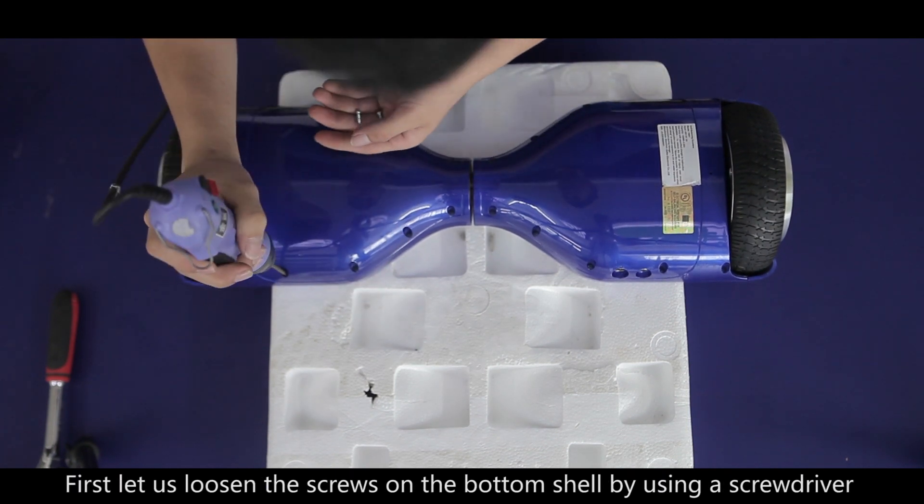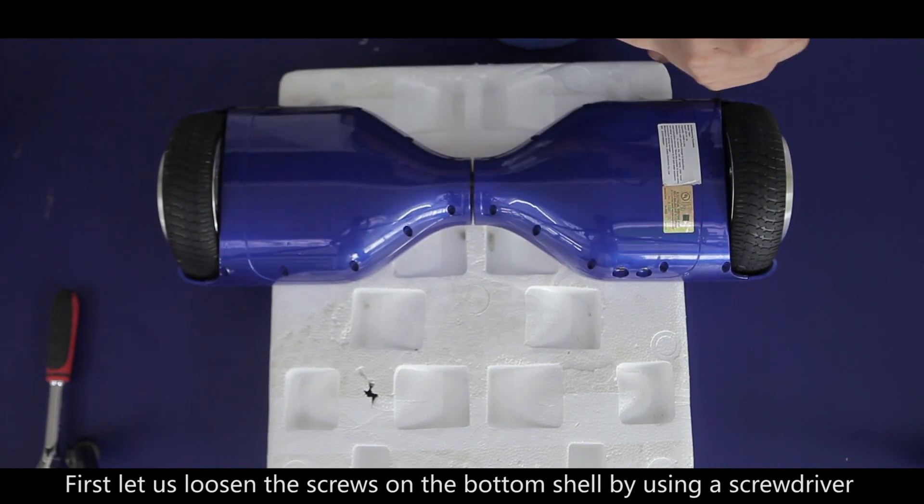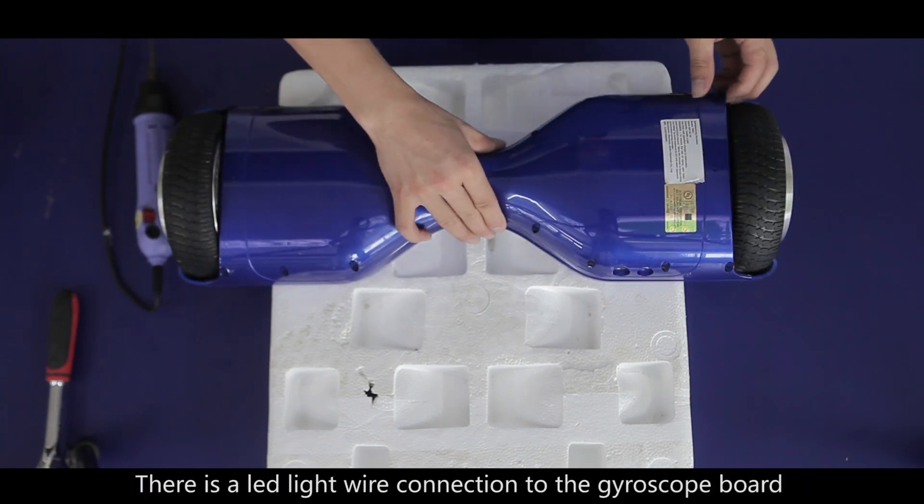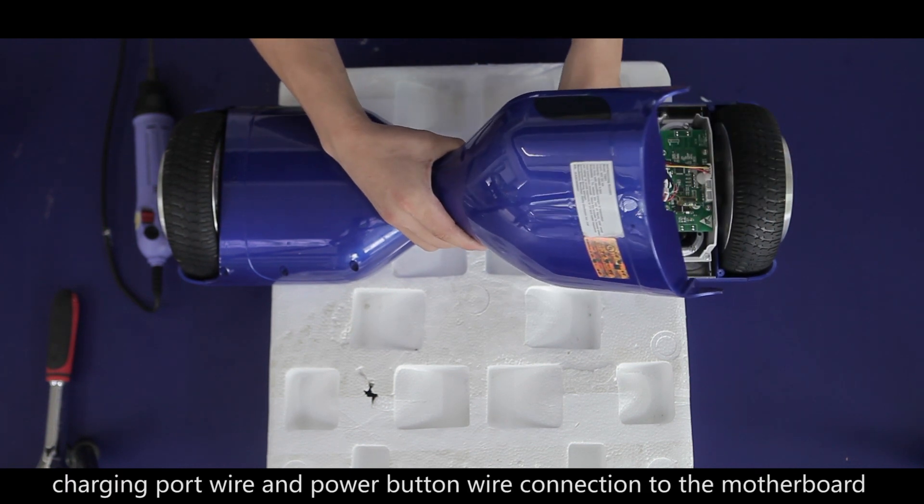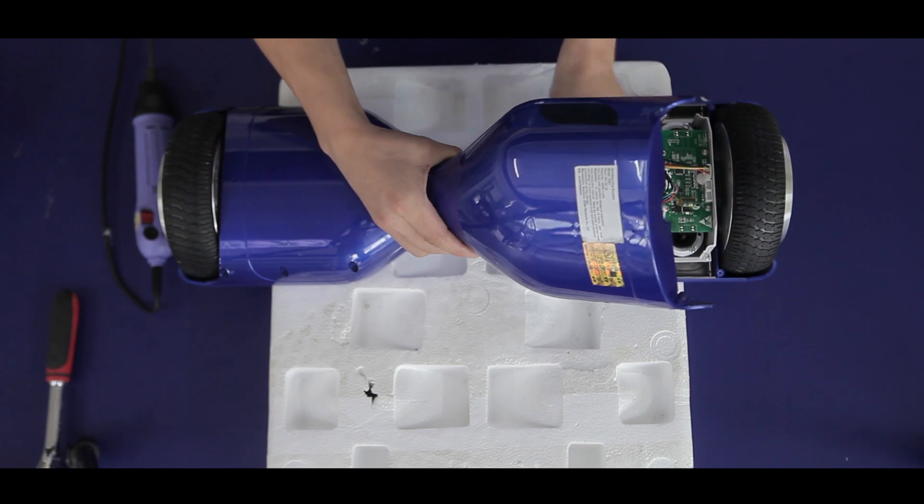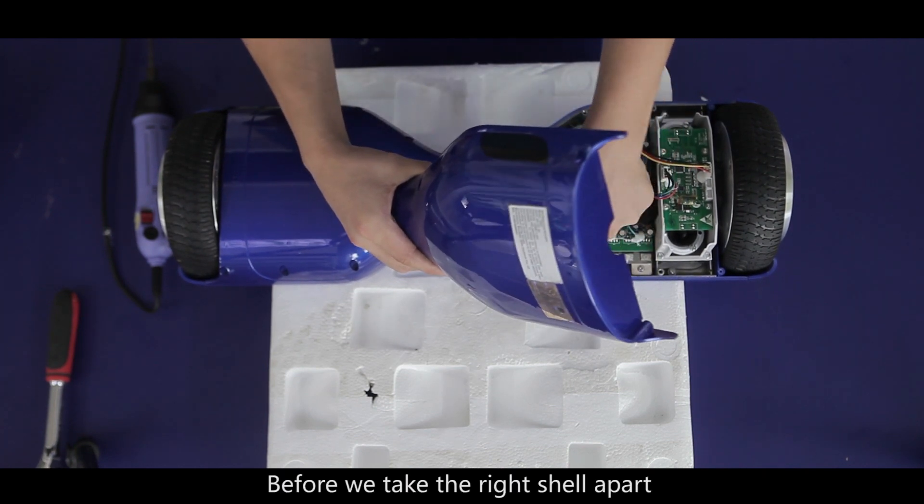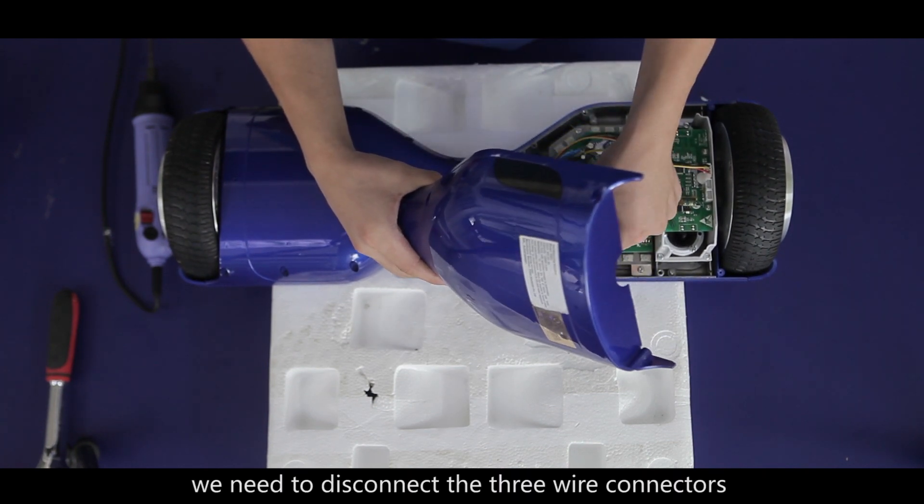First let us loosen the screws on the bottom shell by using a screwdriver. There is a LED light wire connection to the gyroscope board, charging port wire and power button wire connection to the motherboard. Before we take the right shell apart, we need to disconnect the three wire connectors.